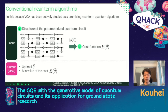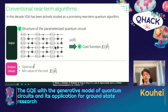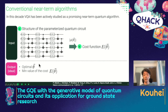As a conventional quantum algorithm, in this decade, variational quantum algorithm — VQA — has been actively studied. The input of VQA is the structure of the parameterized quantum circuit and the definition of the cost function. As a result of the optimization, we get optimal parameter values as an output, and we get the minimum value of the cost function in the ideal case.